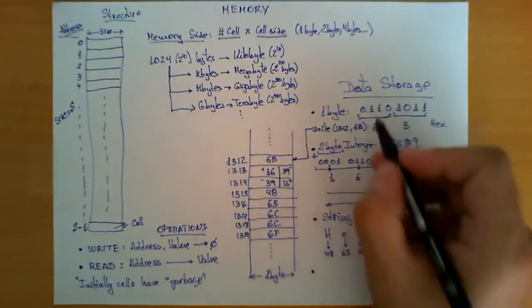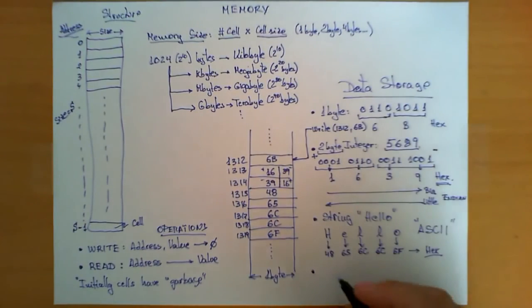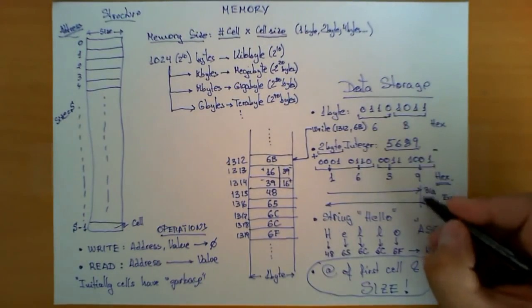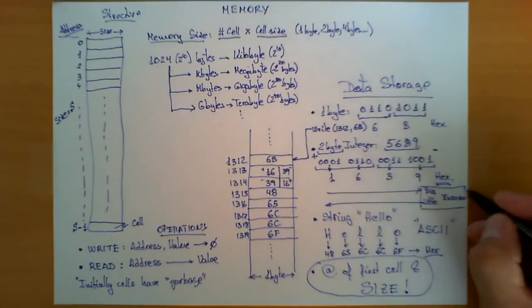So remember, when you have to store any data in memory, what you have to remember is the address of the first cell and, very important, the size of what you are storing. And if you are storing an integer, you also have to remember which one of the two schemes, Little Endian or Big Endian, have been used.